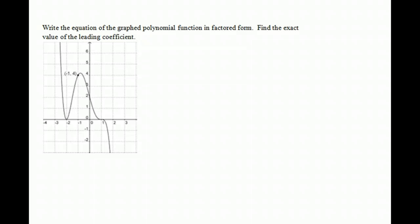So the first thing we should do is examine the zeros, and we should notice that there's a zero at negative 2. Since it is tangent to the x-axis, that tells us there's a double zero, a double root, or it's called a multiplicity of 2.